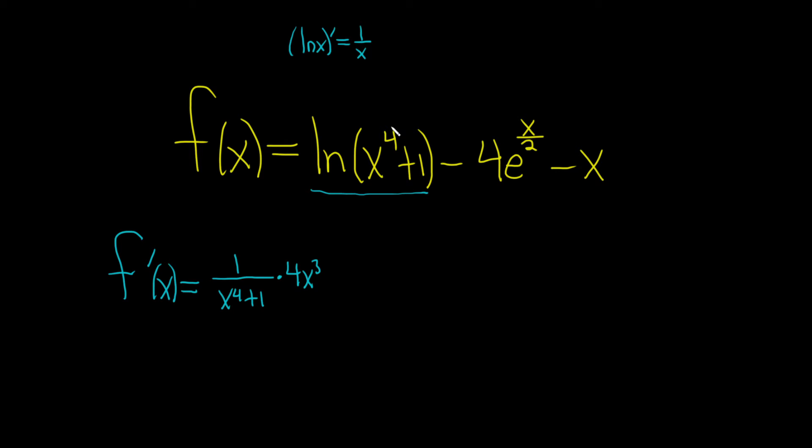Again, whenever you have to take the derivative of the natural log of some stuff, it's just 1 over whatever's there, and then times the derivative of the inside. That's the chain rule.